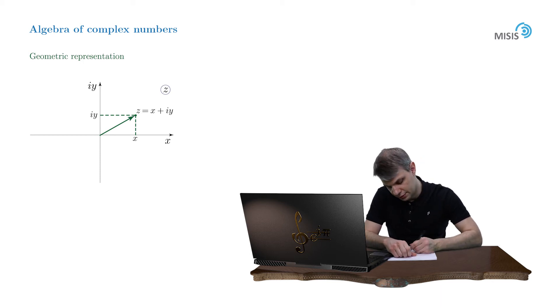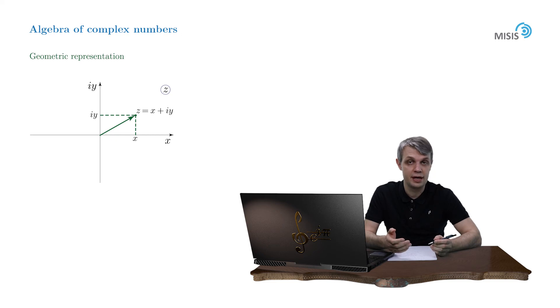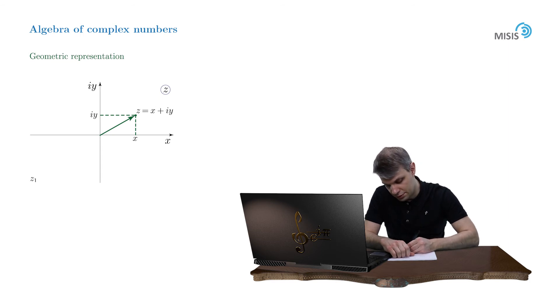And another way of representing the same complex number is by a radius vector pointing at this point. So the length of this vector is, in fact, the modulus of our complex number, as follows from Pythagorean theorem. Now this vector representation of a complex number inherits the operation of addition and subtraction from algebraic form. For example, the difference or sum of two complex numbers like z1 and z2 may be recast in terms of the difference and sum of corresponding vectors in the complex plane.